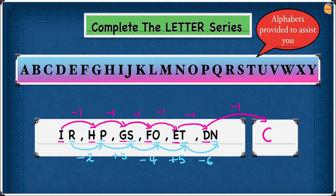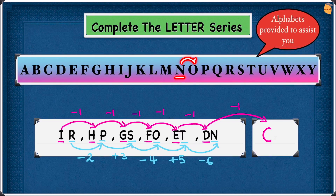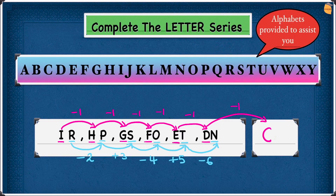Got the pattern yet? As you can see we are going minus 2, plus 3, minus 4, plus 5, minus 6 — so it's going to be plus 7. Starting from N, plus 7 from N: 1, 2, 3, 4, 5, 6, 7 — plus 7 will land us at U. So the second part of our answer is U, and our answer is CU.